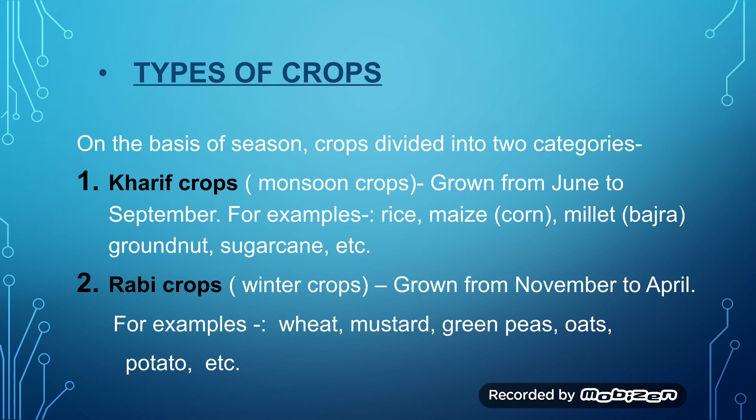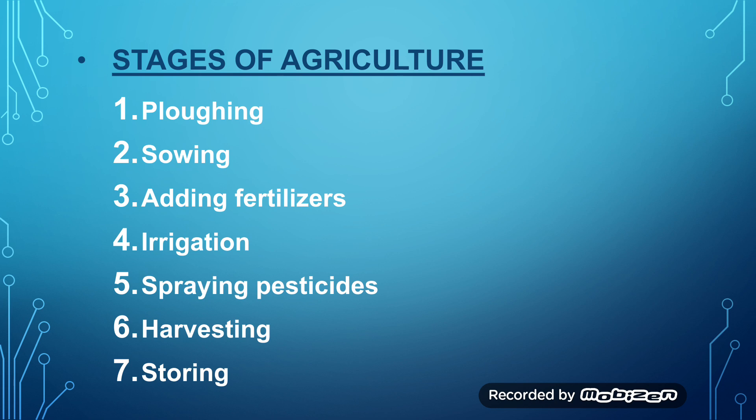Now come to the next topic: Stages of Agriculture. Growing crops involves various stages. How do farmers grow crops? We have seven stages: first is plowing, second is sowing, third is adding fertilizers, fourth is irrigation, fifth is spraying pesticides, sixth is harvesting, and seventh is storing.